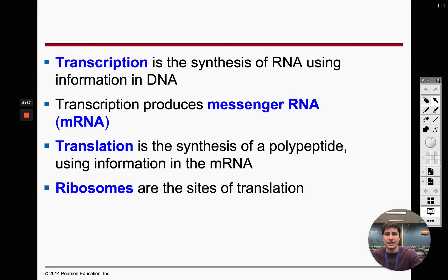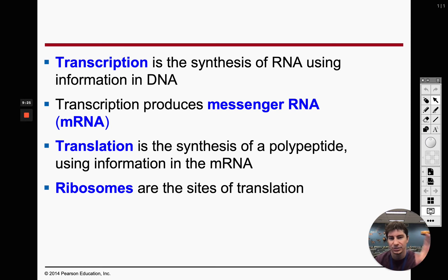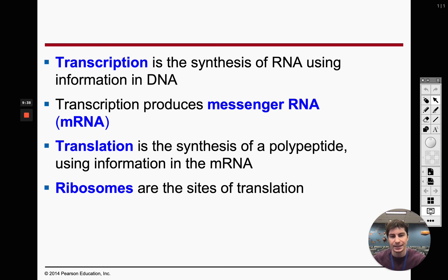Transcription is going from DNA to RNA. The specific RNA we're making is mRNA — messenger RNA. Think of it this way: DNA carries all the instructions for making a protein, and we're going to take that message and give it to the messenger, mRNA. That mRNA carries the instructions from DNA to outside the nucleus so we can reach a ribosome and make a protein.